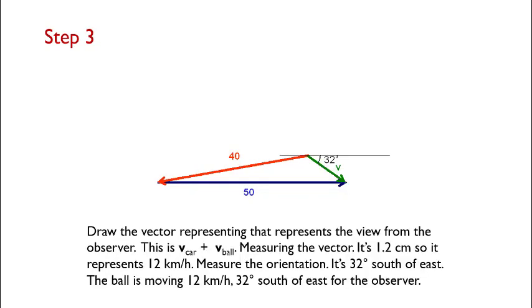Now we're ready to connect the tail of the throw of the ball to the head of the motion of the car. This is our velocity of the car plus the velocity of the ball, and jointly gives us the vector that is seen from the stationary motion of the observer on the platform.